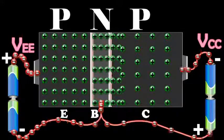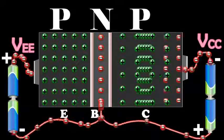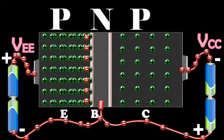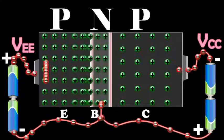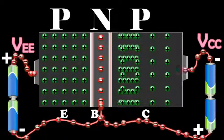The remaining number of holes which do not undergo recombination in the base reach the collector. These are neutralized by an equal number of electrons flowing from the negative terminal of the battery VCC into the collector.